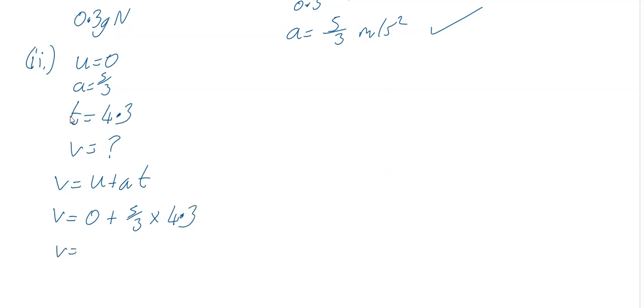So your V works out to be 5 divided by 3 then times 4.3, and that gives me a perfect answer of 7 and one sixth meters per second.